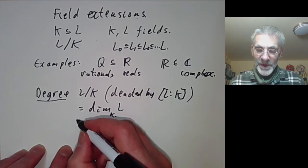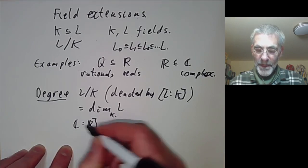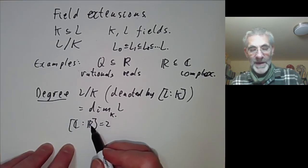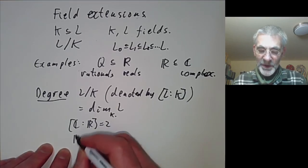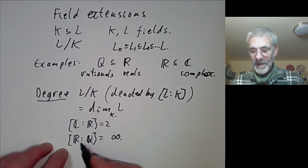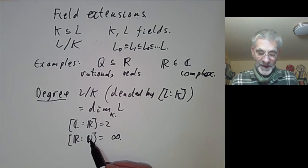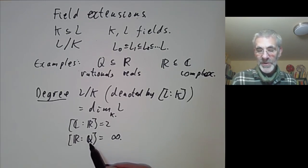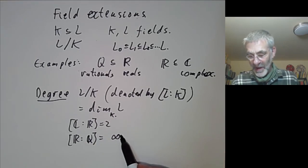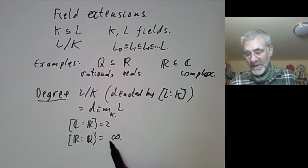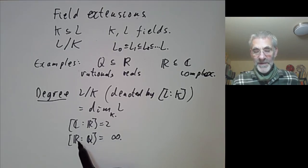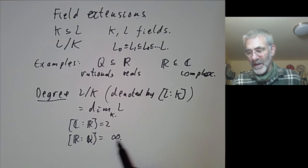For example, the degree of the complex numbers over the reals is just two, because the complex numbers form a two-dimensional real vector space. And the degree of the real numbers over the rationals is infinite, because the real numbers are an infinite-dimensional vector space over the rationals. If you're a set-theory type person, you know that this symbol infinity is actually a bit sloppy, because there are lots of different infinities in set theory — you can ask whether this is a countable or uncountable infinity.